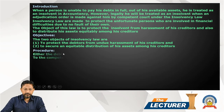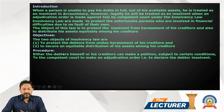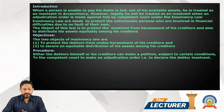The procedure is that either the debtor himself or his creditors can make a petition, subject to certain conditions, to the competent court to make an adjudication order — that is, to declare the debtor insolvent.